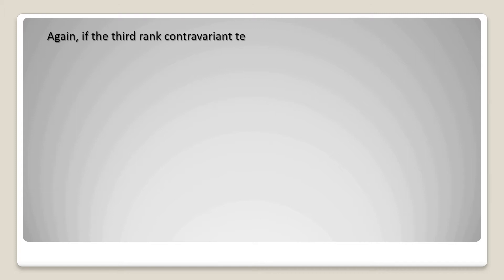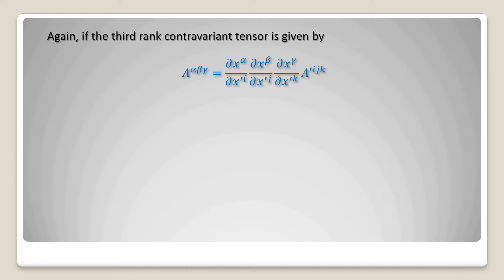If the third rank contravariant tensor is given in the form a upper suffix alpha beta gamma equal to del x alpha by del x prime i, del x beta by del x prime j, into del x gamma by del x prime k, again into a prime upper suffix ijk — that means the non-dash term is on the left hand side and the dash term is on the right hand side. Here is how to write this type of contravariant tensor transformation: first write a upper suffix alpha beta gamma and del x by del x three times because this is a contravariant tensor of rank 3, into a.